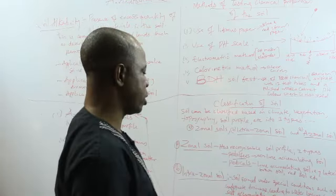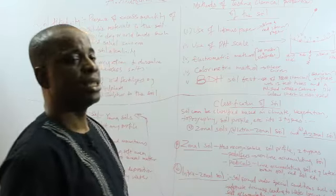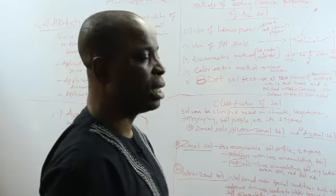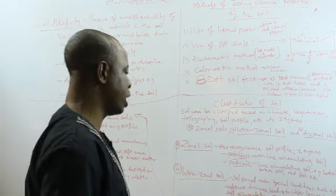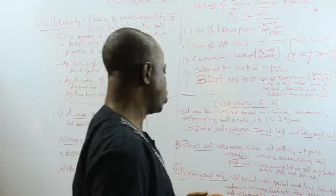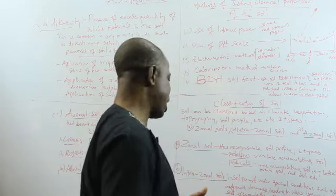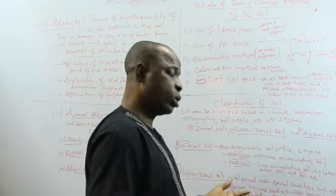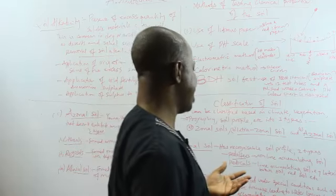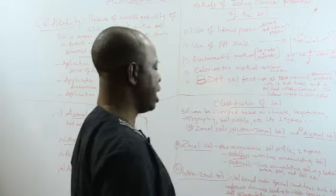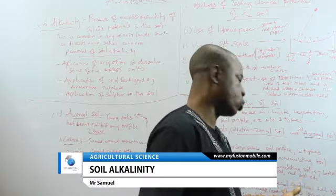So the zonal soil has two types. You have the pedalfers and the pedocals. The pedalfers, these ones, they don't have lime accumulating material. In that word, they do not have much of clay particles in them. They are not so strong. They are non-lime accumulating soil. For the pedocals, this one has much of calcium, so it has more of lime in them. So pedalfers, they have lime accumulating soils. They have more of calcium. Examples are brown soil or red soil, which we call laterite.